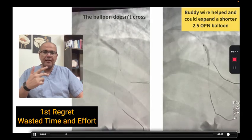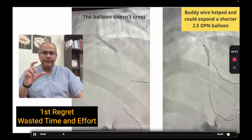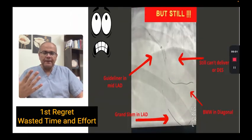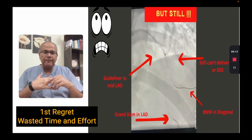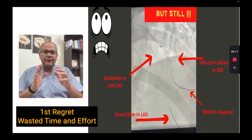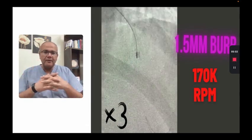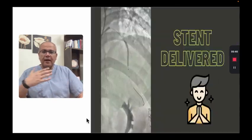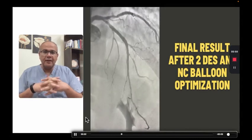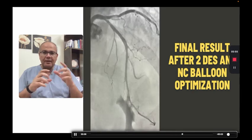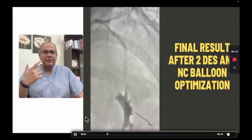We placed our wires — one in the LAD, one in the diagonal — but we couldn't cross with the balloon. A buddy wire helped and we could expand a shorter 2.5 mm balloon. We thought the job was done and it was time to deliver the stent, but to our surprise we were unable to deliver anything. Although we had a heavy support wire in the LAD, another wire in the diagonal, and a guide catheter extension at the lesion, we were still unable to deliver any balloon or stent. The answer was that we needed to ablate because of the long segment of fluoroscopic calcium. We did three runs of rotational atherectomy with a 1.5 mm burr, and once this was done, the stent was delivered easily, expanded, and optimized — final result after two drug-eluting stents and balloon optimization. The lesson: whenever you see a long segment of fluoroscopic calcium, there's a big chance balloons alone will not be sufficient, so think of upfront rota.